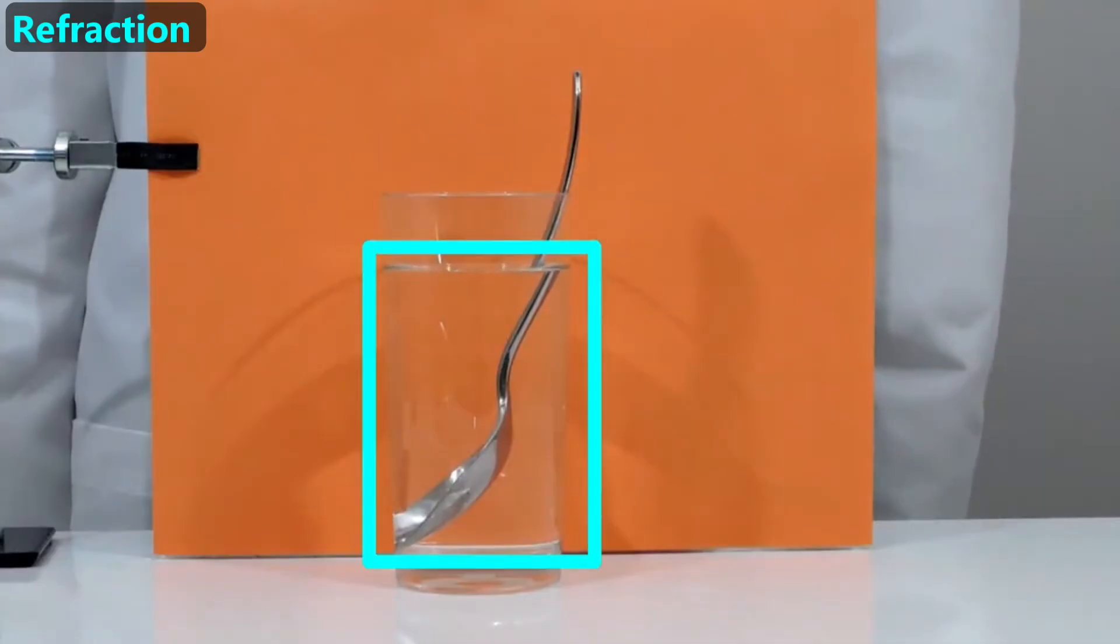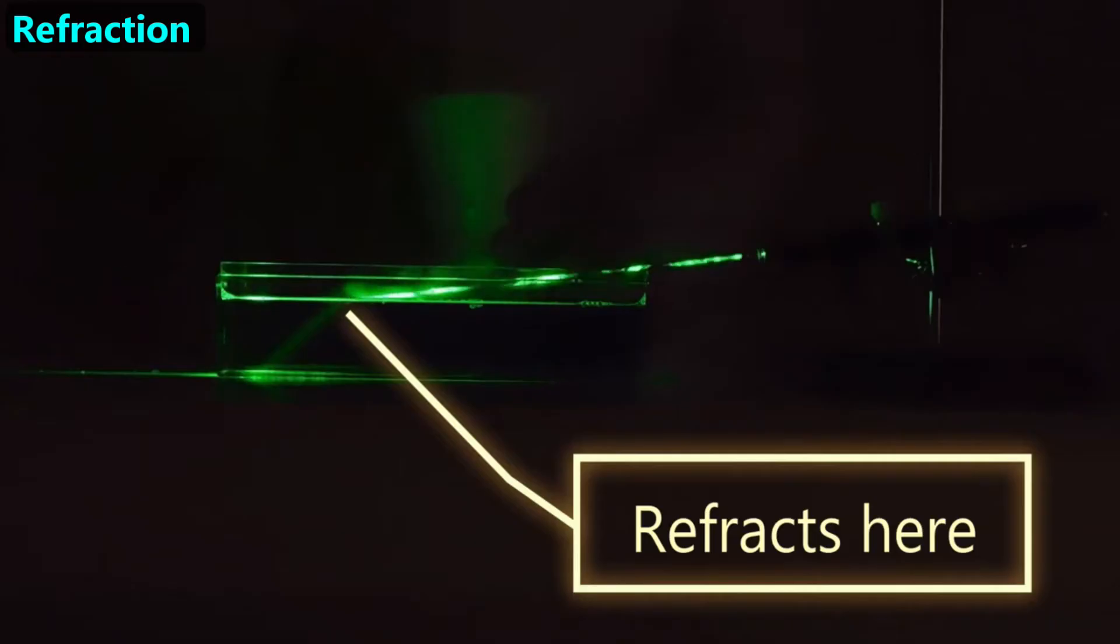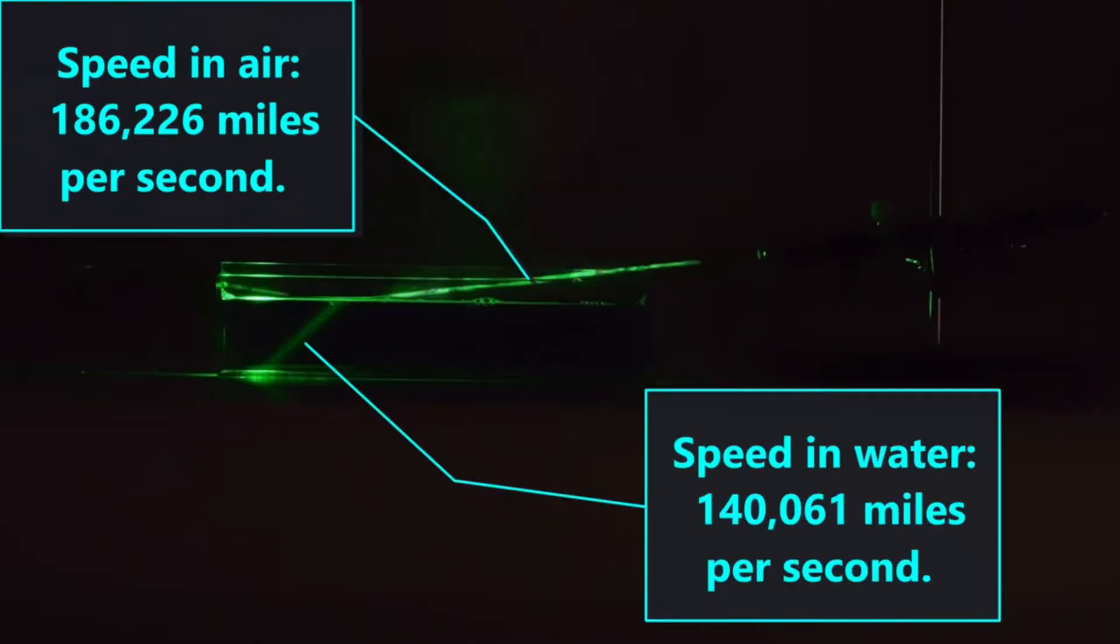Next, we'll introduce refraction. This laser's light beam is bending as it travels from air to water. This is an example of refraction. This happens because the wave's speed is different as it travels through each medium.